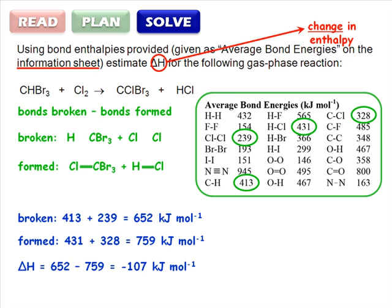The value, negative 107 kJ per mole, is a negative quantity consistent with an exothermic reaction.